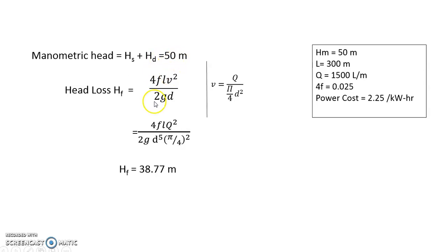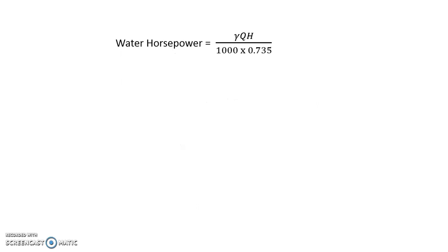Now manometric head is 50 meters, head loss is 38.77 meters, so the total head against which the pump has to work is 50 plus 38.77, altogether it is 88.77 meters.